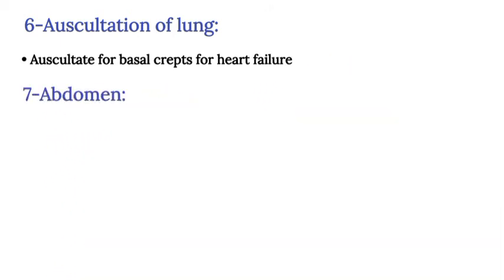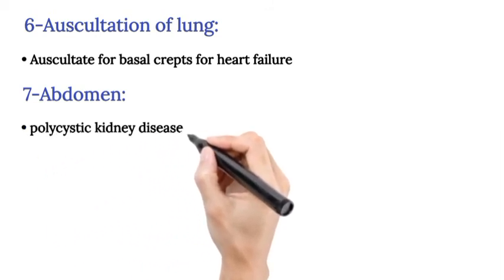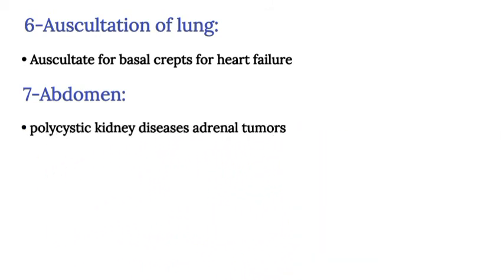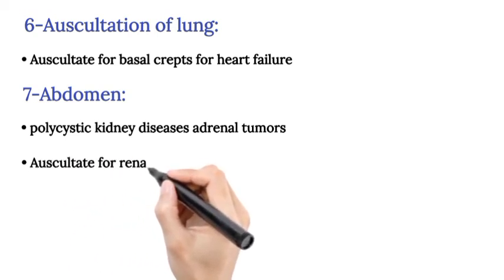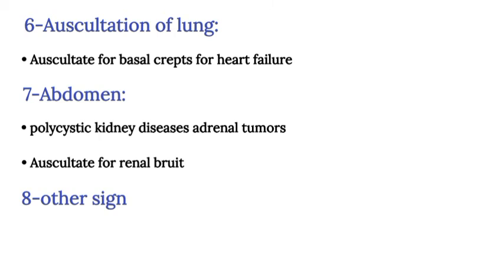Abdomen: Palpate for renal or adrenal masses such as polycystic kidney disease or adrenal tumor. Auscultate for renal bruit. Other signs: Take BP of lower extremities if HTN develops before age of 30 years to check for coarctation of aorta.